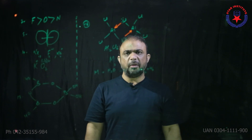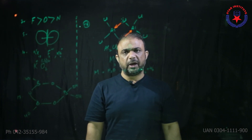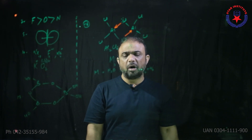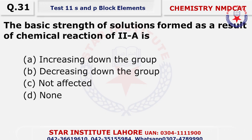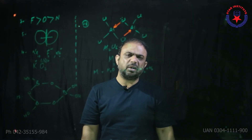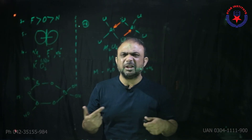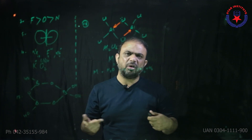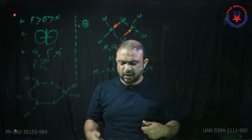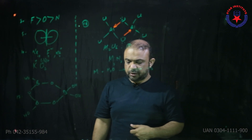When atomic sizes become similar, their properties also become similar — on this basis of similarity we say they are diagonally related. For example, aluminium forms a surface oxide coating, and boron similarly forms an oxide coating. Question number 31: The basic strength of the solutions formed by group 2A increases down the group — so basic strength increases going down. Choice A.